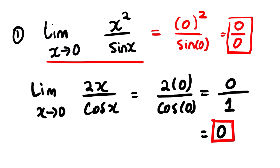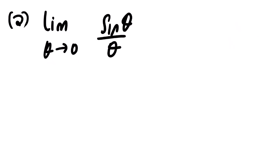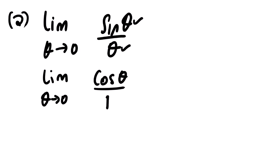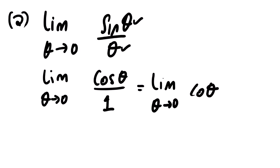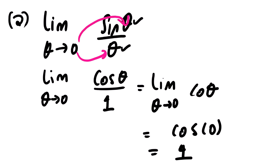Let us look at our second example: the limit as theta approaches 0 of sine theta over theta. When you substitute 0 we get 0 over 0, which is not known, so we need to find the derivative. The derivative gives us the limit as theta approaches 0 of cos theta. When we substitute we have cos(0), which equals 1. So the answer is 1, not 0.